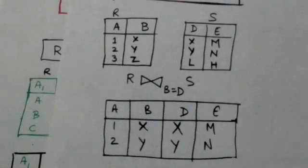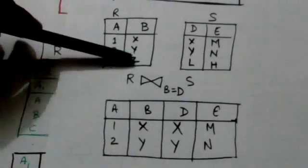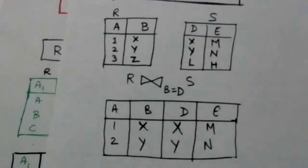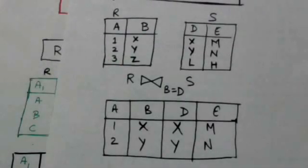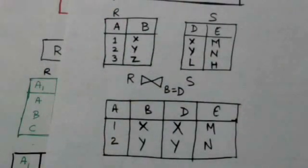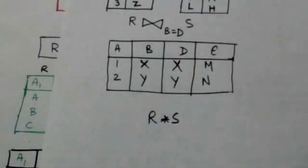In this join operation, this tuple of relation R will not appear in the result because there is no tuple in relation S in which the value of attribute D is the same as the value of attribute B of this tuple of relation R. Similarly, this tuple of relation S will also not appear in the resulting relation.